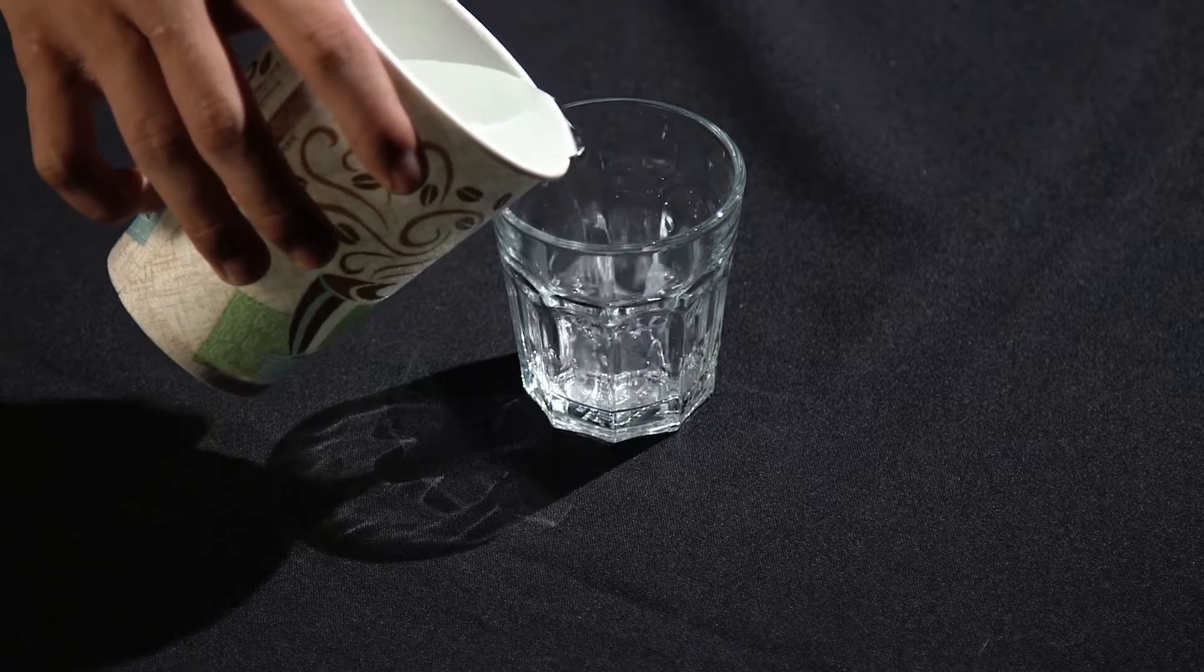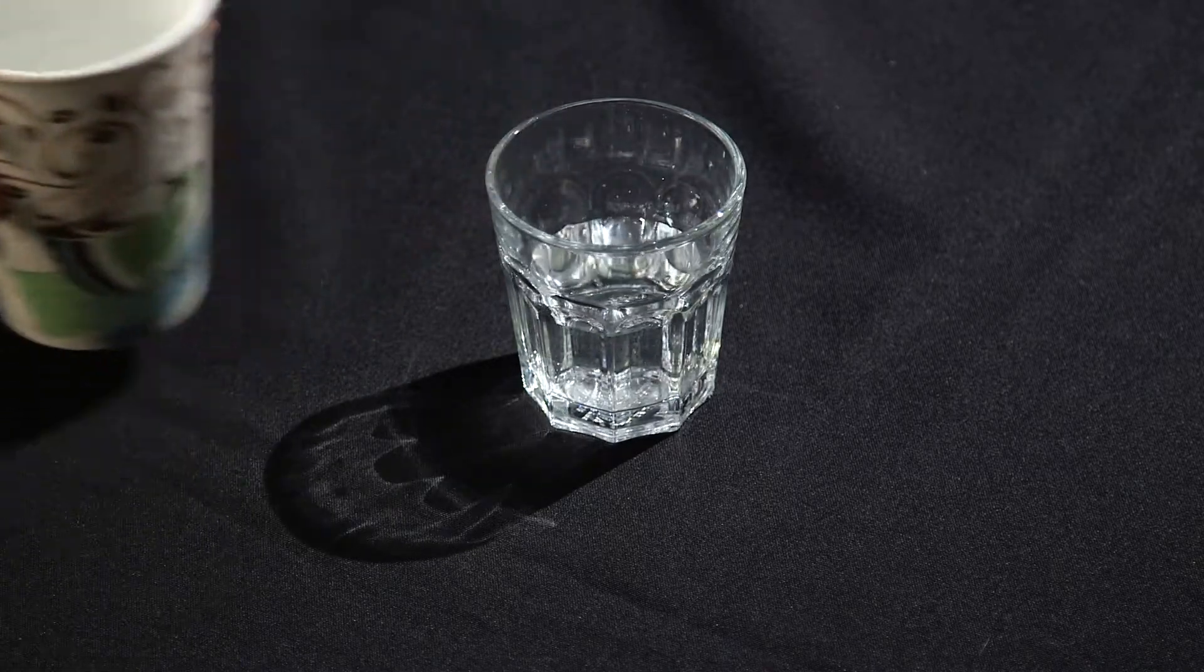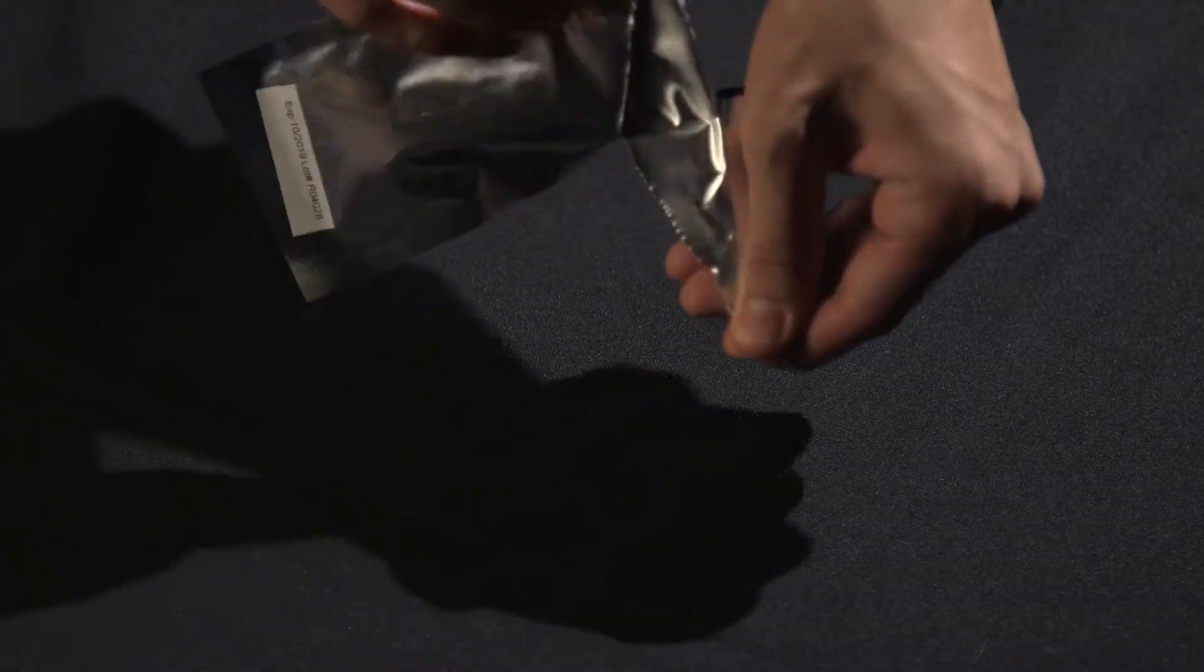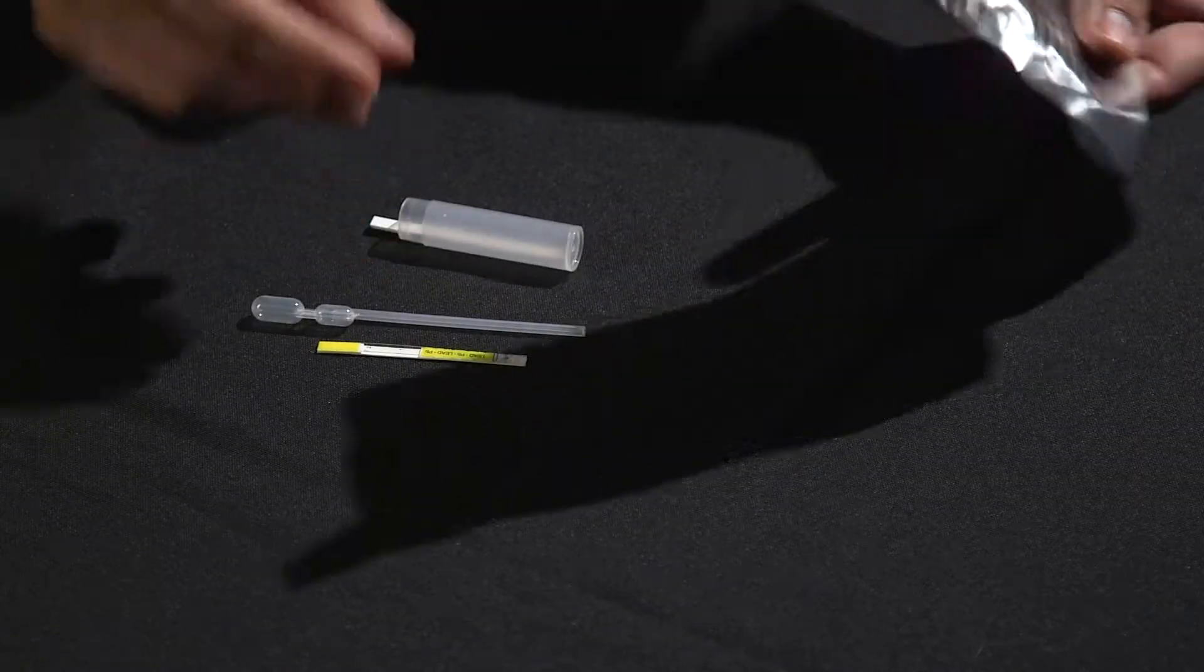First, pour at least four ounces of water into your water container. Now open the foil pouch and take out your test vial, dropper pipe, and two test strips.